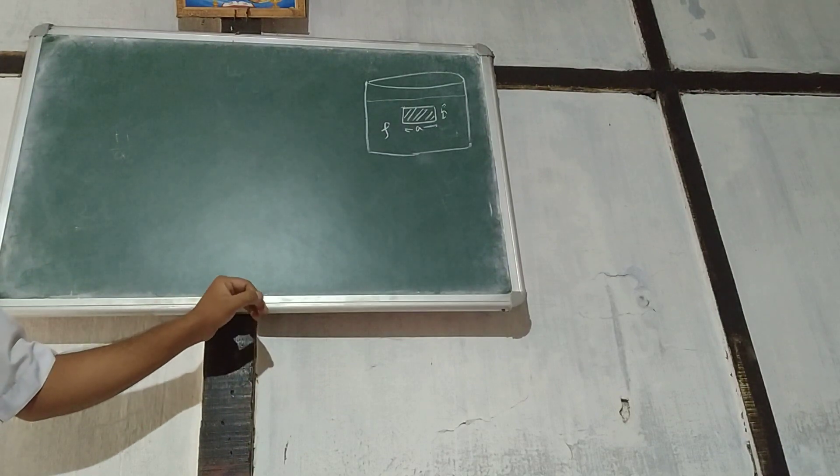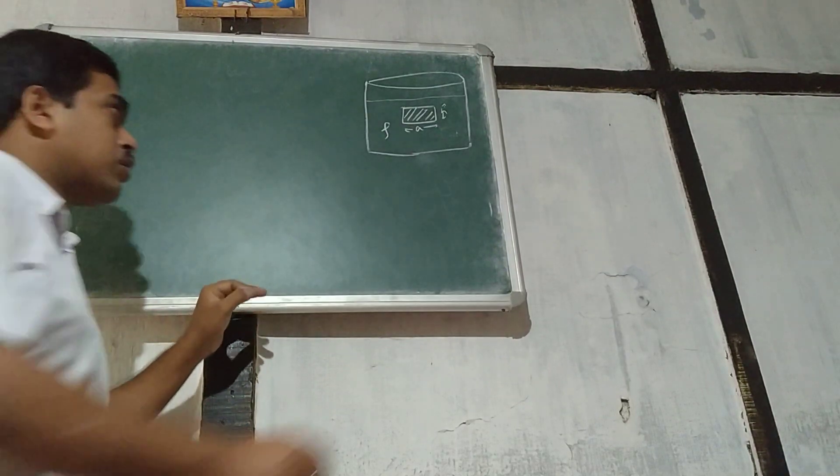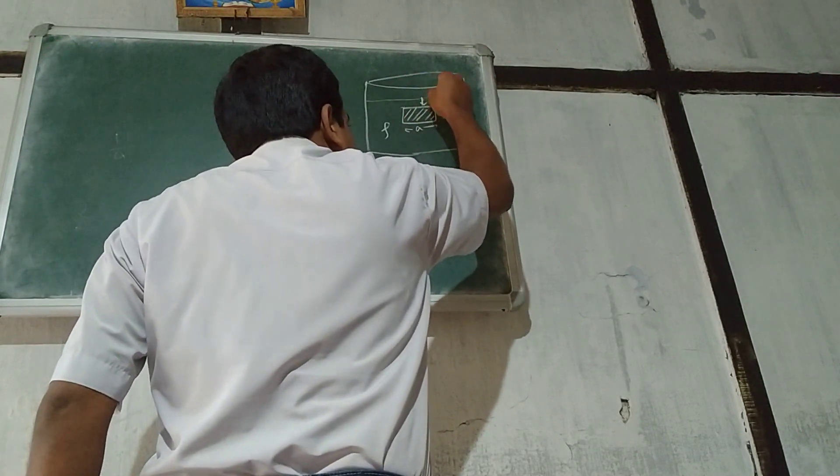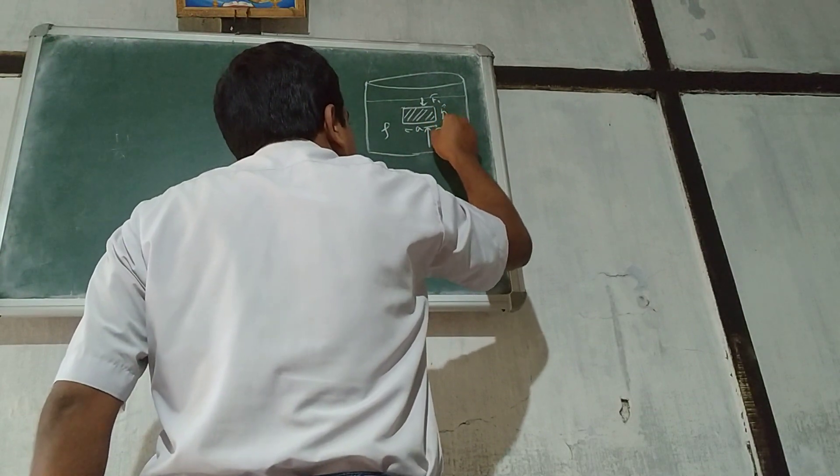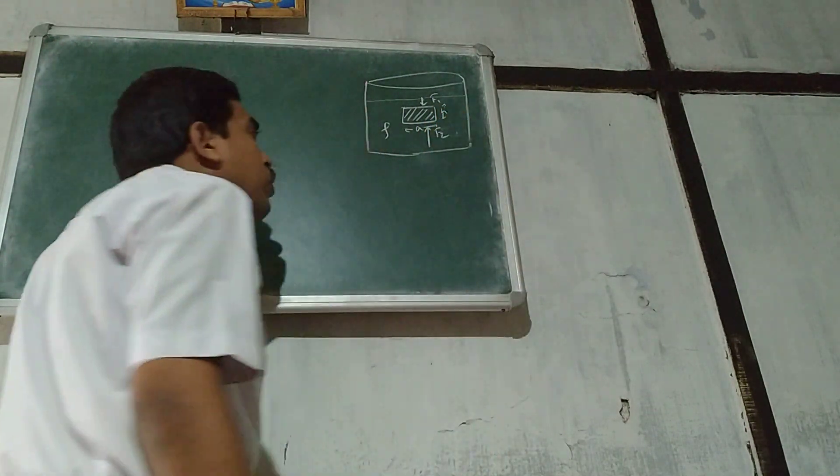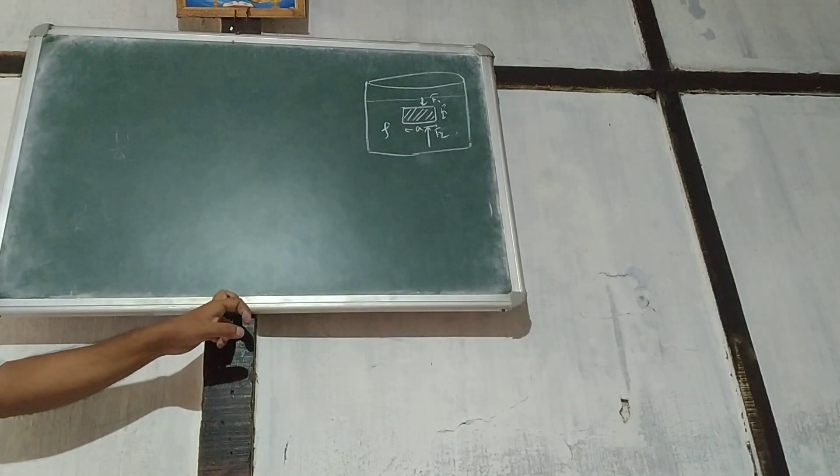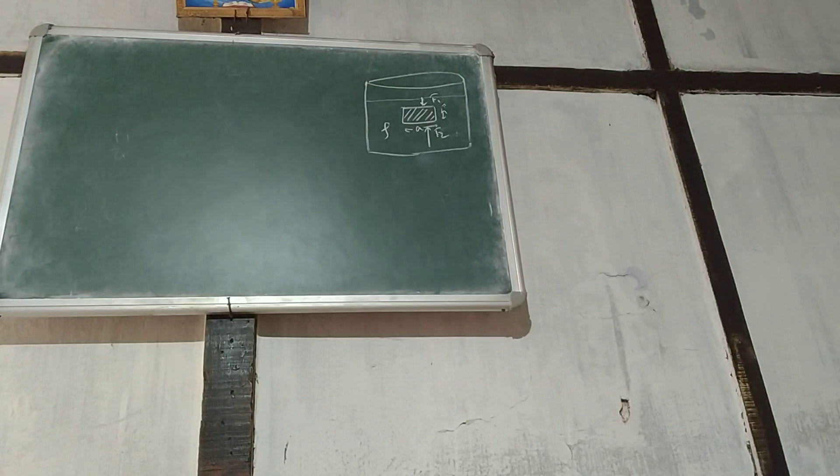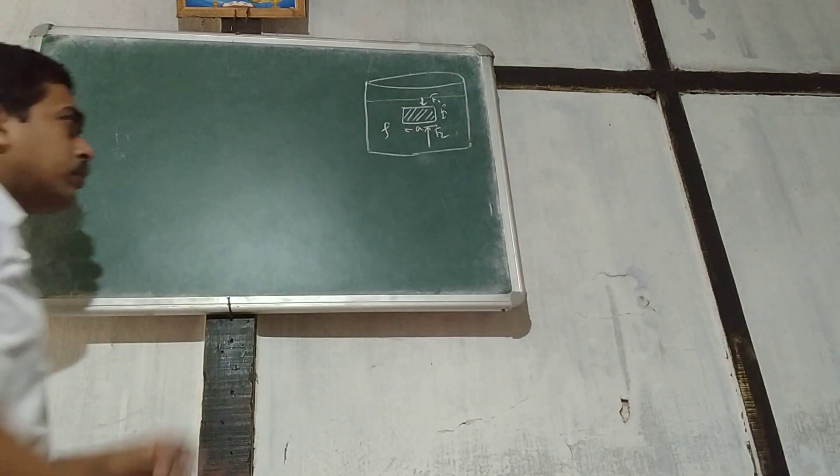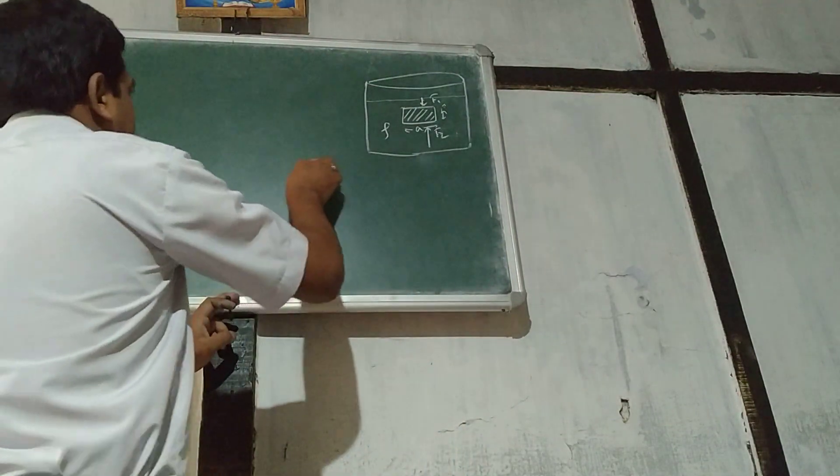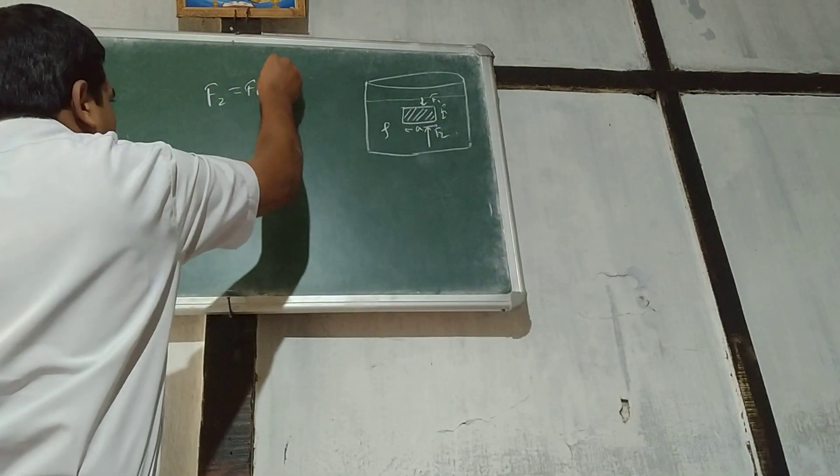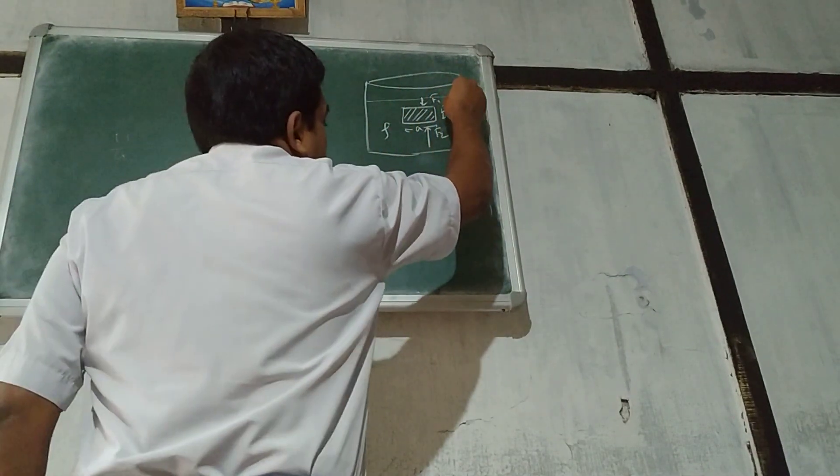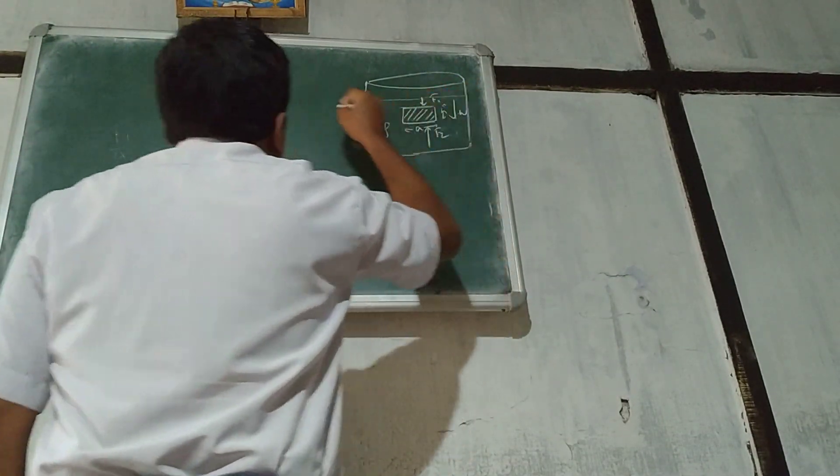Then we have the forces. From up, F1 force is given. From down, F2 force is given. The forces will be different. F1 and F2 will vary. F2 will be more. F2 equals F1 plus something. That something is the weight of the liquid W.